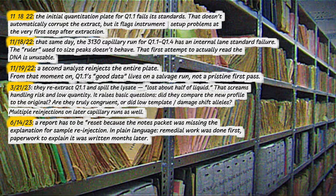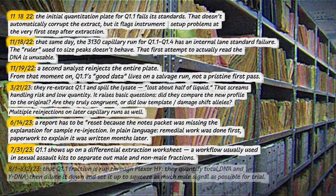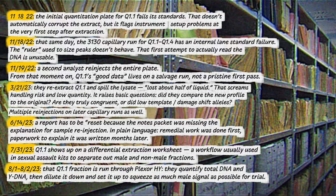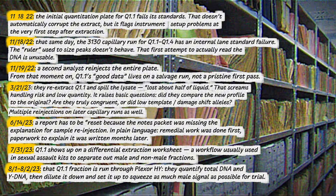Fast forward to late July and early August 2023 — nine months after the murders. On 7-31-23, Q1.1 shows up on a differential extraction worksheet, a workflow usually used in sexual assault kits to separate male and non-male fractions. On 8-1 through 8-2-23, that Q1.1 fraction is run through Flexor. They quantify the total DNA and Y-DNA, then dilute it down and set it up to squeeze as much male signal as possible for trial. That's not 'do we have any DNA?' — that's 'how much male DNA can we salvage here, and can we make it look as strong and clean as possible before we put it in front of a jury?'